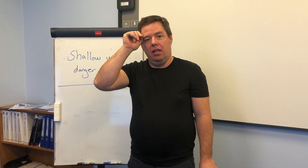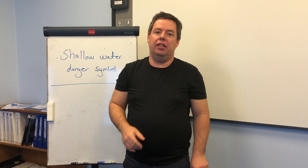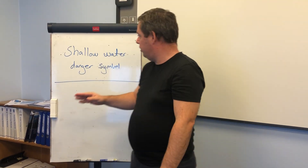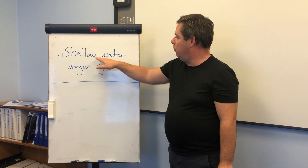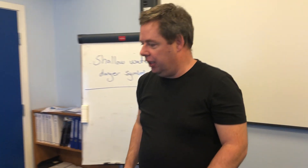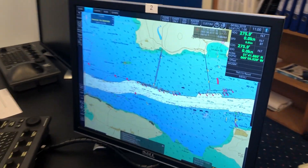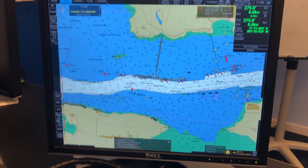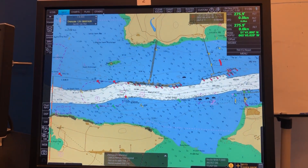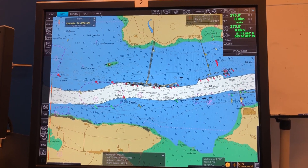Hello everyone and welcome back. Today I would like to talk about the isolated danger symbol. On the Furuno ECDIS it's called something different — it's called the shallow water danger symbol. This symbol you can use to show underwater dangers like a wreck, fish haven, or the likes.